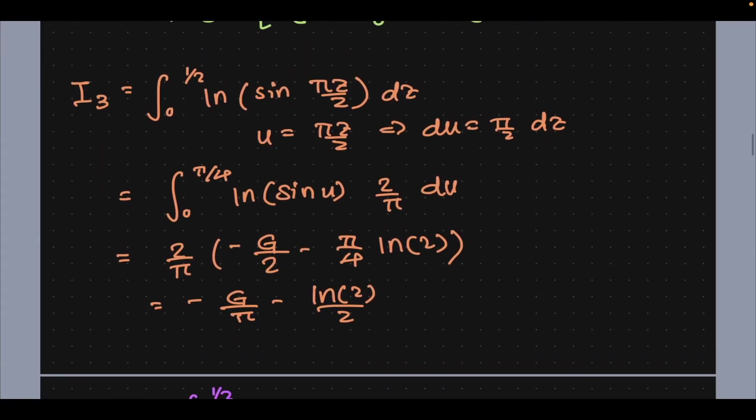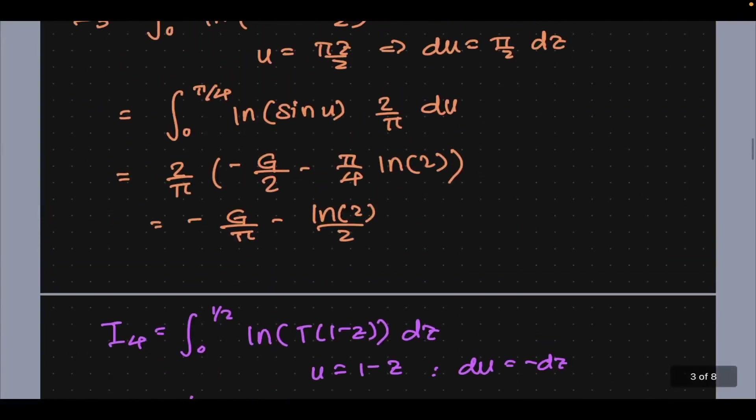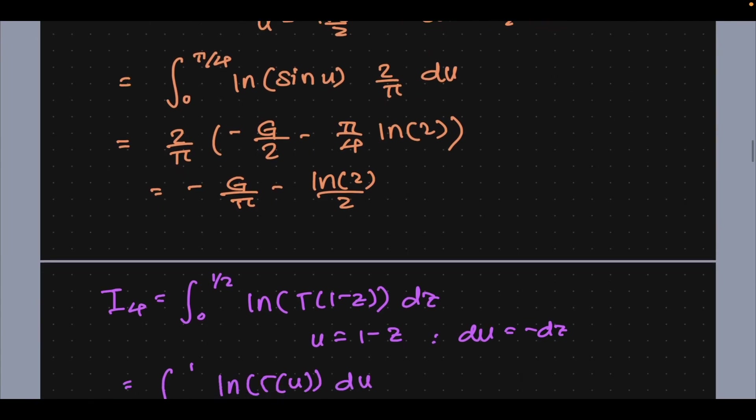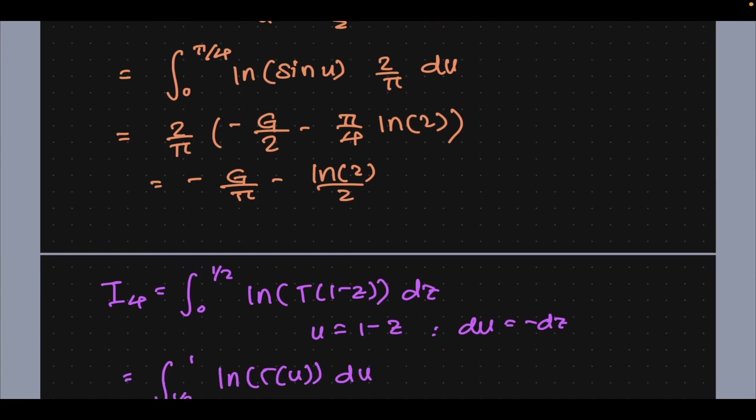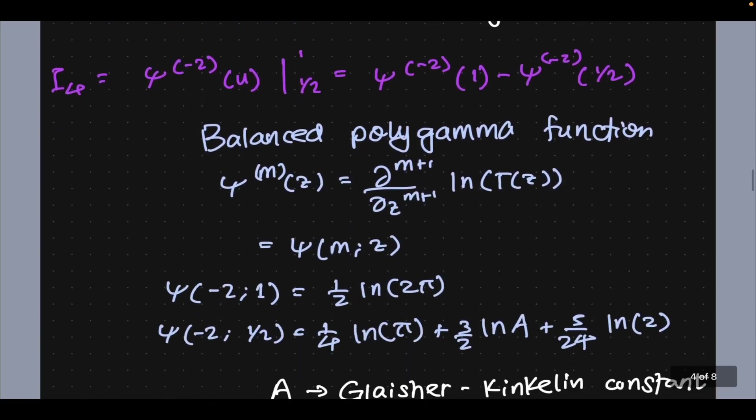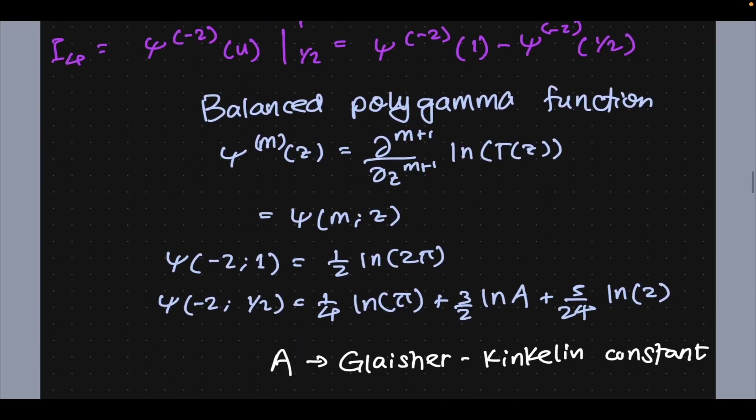And then everything else was basically a part of what we knew and what we've done before, like the sine integral. Do watch that video, it's really simple. Just Taylor series of the natural log after we expand, write the sine as a difference of exponentials using Euler's identity. And then everything else is sort of given to us via the balanced polygamma function.